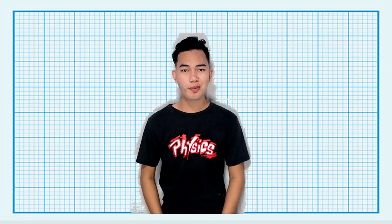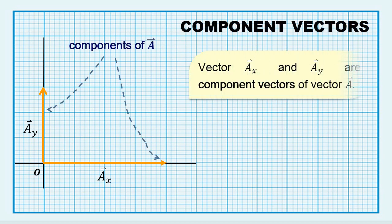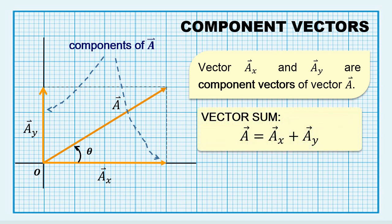To define what we mean by components, let's start with the coordinate plane. We can represent any vector aligned in the x-y plane as the vector sum of the vector parallel to the x-axis and the vector parallel to the y-axis. These two vectors are called component vectors of vector A, and their vector sum is equal to A. In symbols, vector A equals vector A sub x plus vector A sub y.